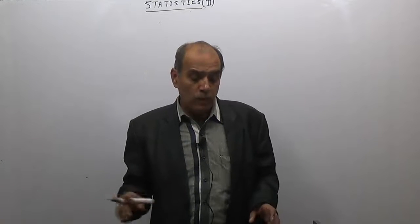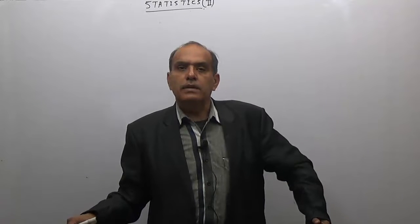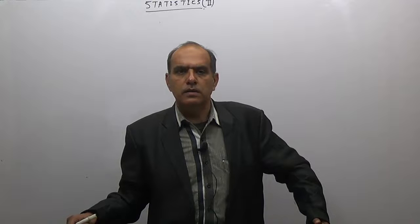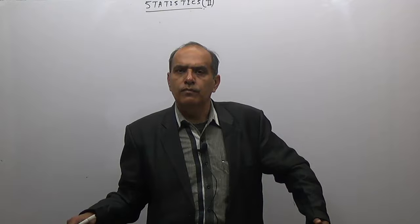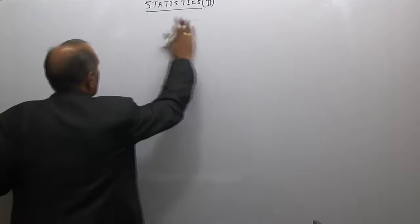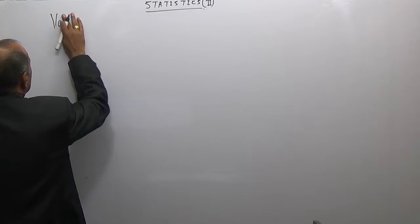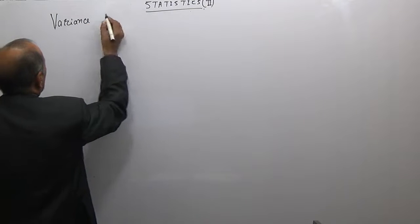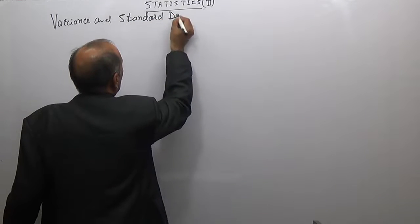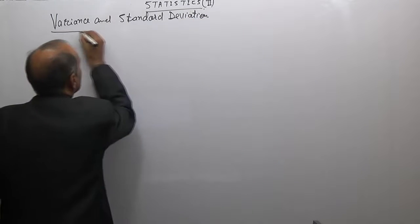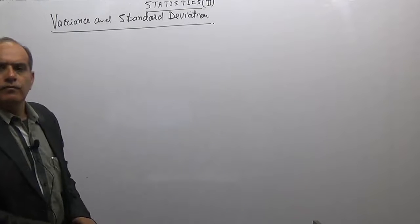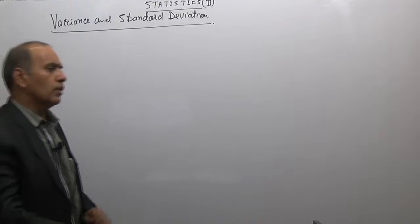Welcome once again. Last lecture में हमने statistics के कुछ central tendencies discuss किए थे, उसके बाद dispersion start किया था - range, quartile deviation, mean deviation. अब हम एक और dispersion measure की बात कर रहे हैं जिसे हम variance and standard deviation बोलते हैं। यह dispersion को measure करने का एक बेहतर तरीका है as compared to other measures.